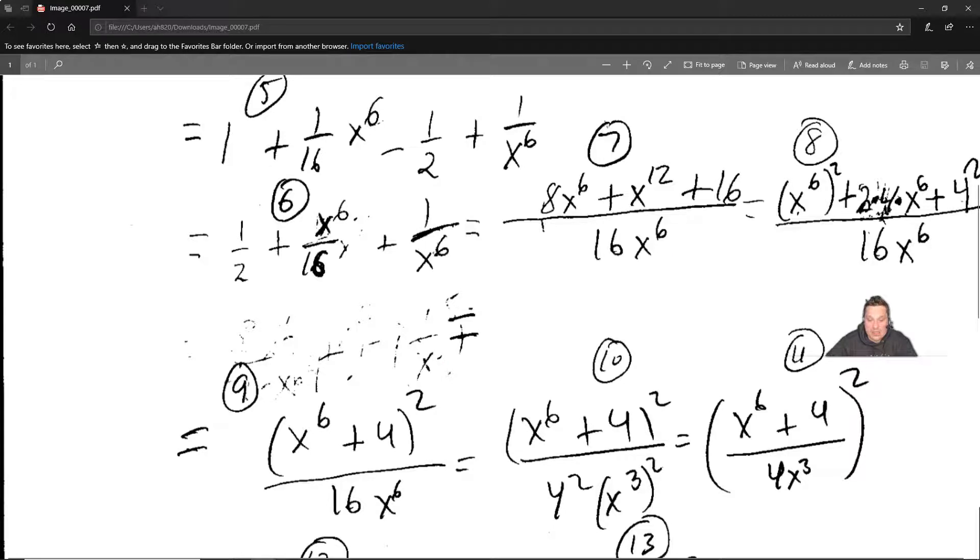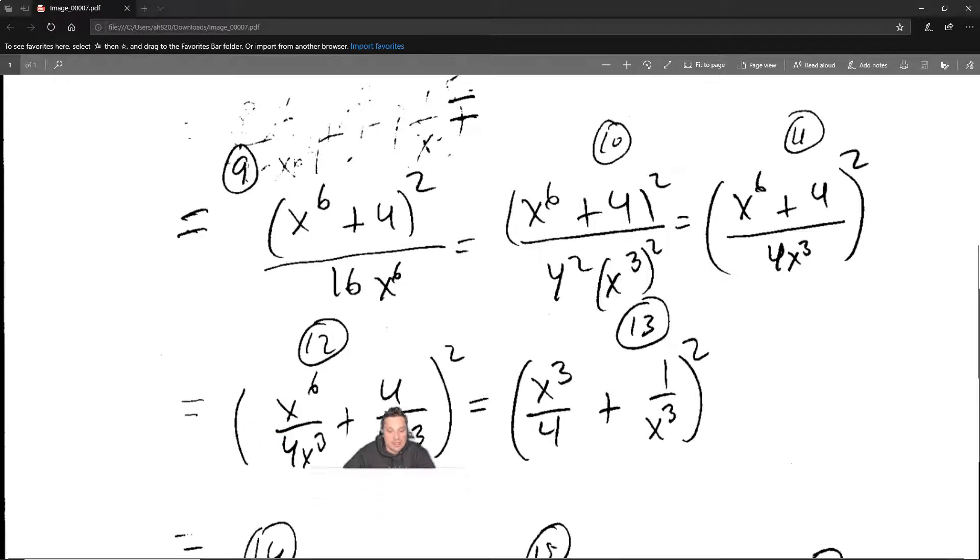And then what it says is the following. Then at step 9 you can write x to the 6th plus 4 and that quantity will be squared. And in the bottom you still have that 16x to the 6th. Continue. Well, you can rewrite 16 as 4 squared and x to the 6th as 4x to the 3rd to the 2nd. And then you can take that 2 and that 2 and you can pull it outside a giant parentheses. So when I do that it's going to give me x to the 6th plus 4 over 4x cubed and the whole thing will be raised to the 2nd after that.